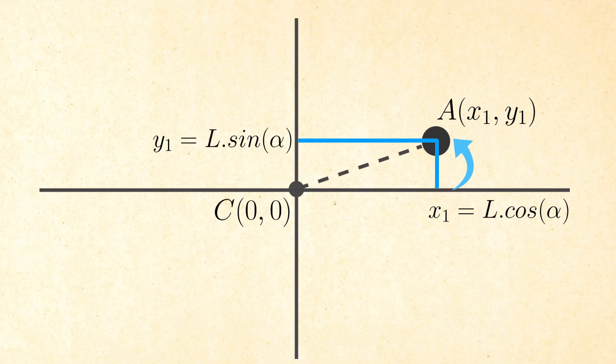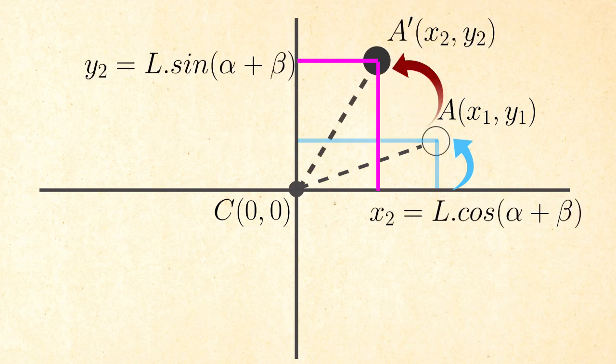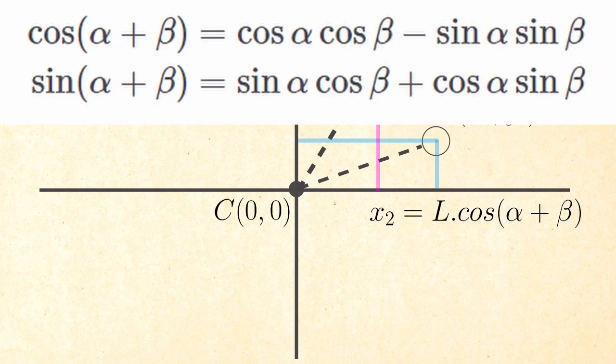Now if you wish to rotate A with an angle beta, then the coordinates will look like this, where alpha plus beta is the overall rotation. But normally you don't have alpha. I mean you just want to rotate A and you don't really care about any initial rotations it might have. This problem can be avoided by using some trigonometrics.